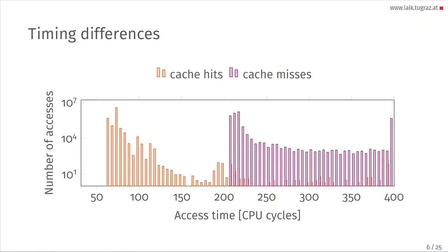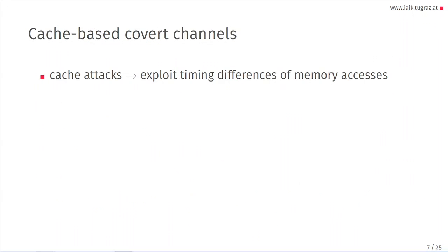The important thing is that we have timing differences for data. If data is present in the cache, we call it a cache hit, and it will roughly take between 50 and 100 CPU cycles. If data is not present in the cache, it's called a cache miss, and it will never take below 200 CPU cycles.